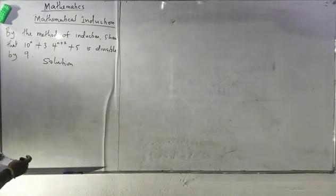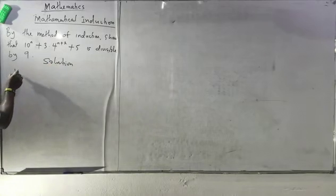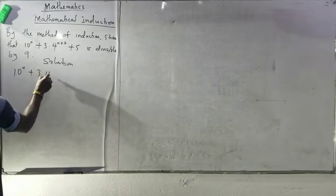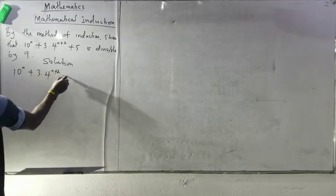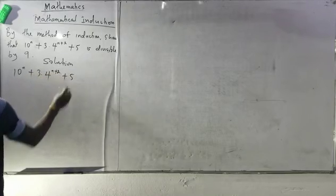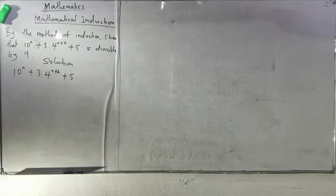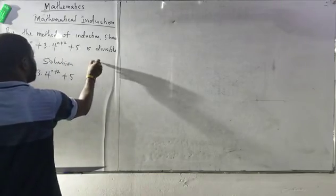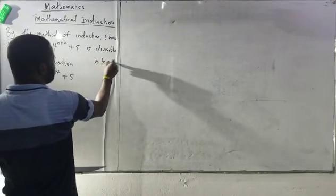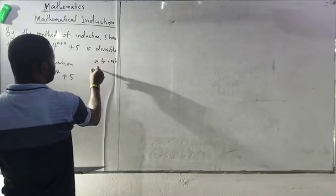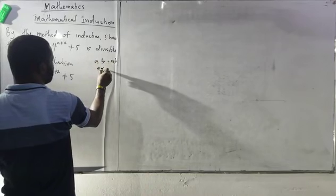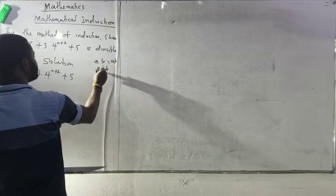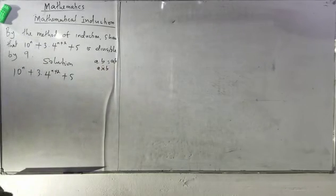The first thing I would do is write out: 10^n plus 3 dot 4^(n+2) plus 5. Mind you, this dot is not a decimal point — it means multiplication. So when we have a dot b, it means a multiplied by b. Please take note of that — it is very important.